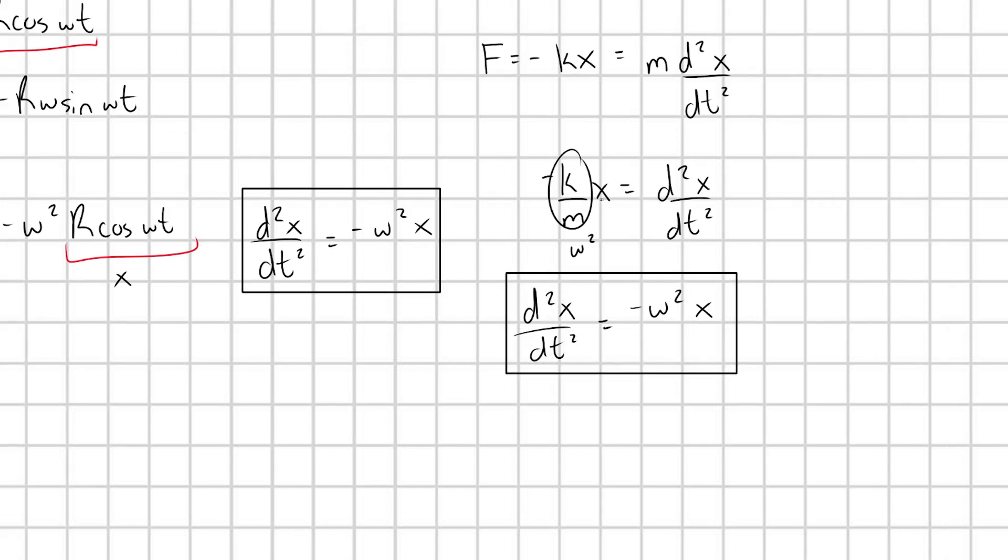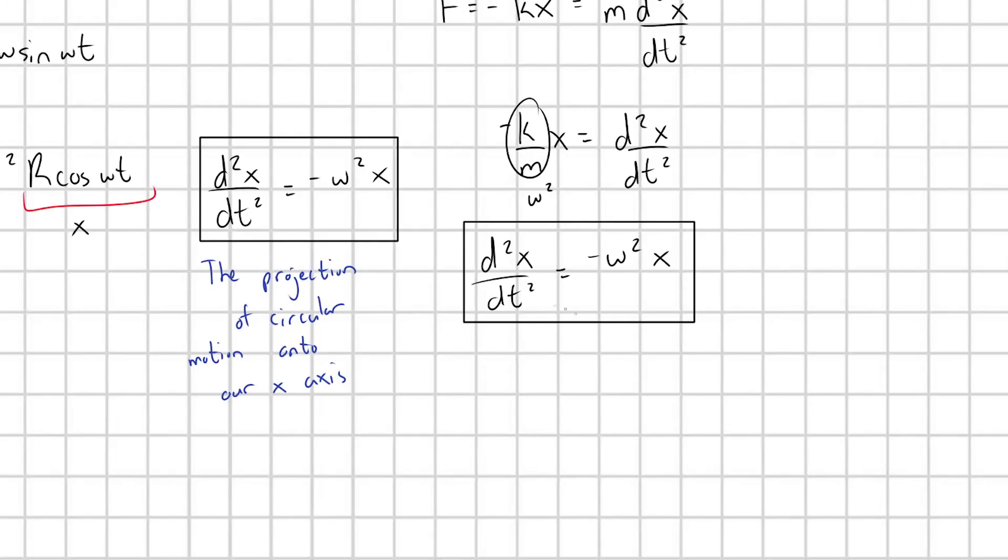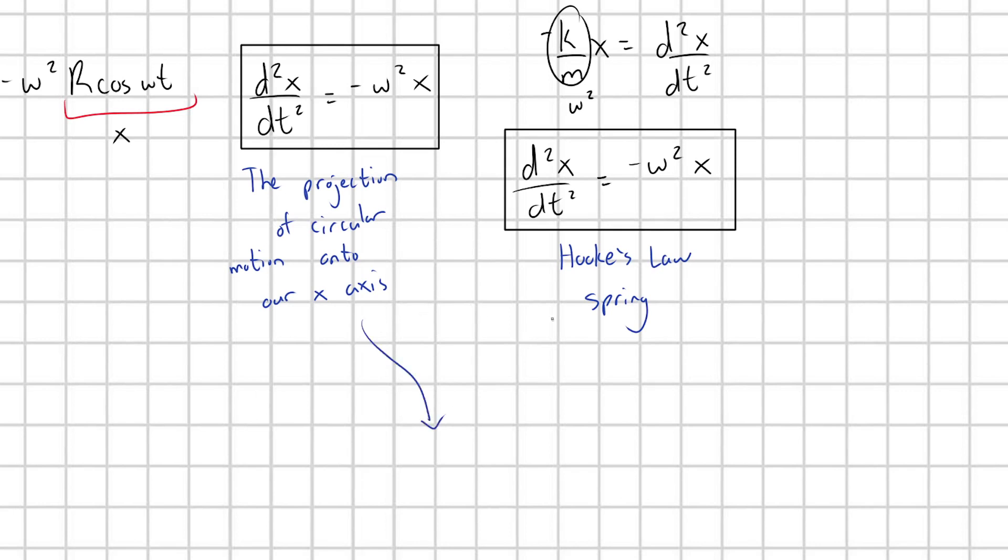So let's remind ourselves where these expressions came from. So this came from the projection of circular motion and this came from a separate problem of looking at a Hooke's law spring. Well guess what? They have the exact same equations of motion form. So in other words, these two motions here are identical, identical motions.